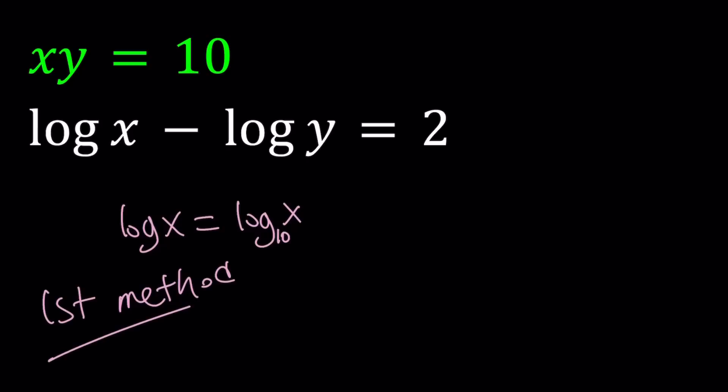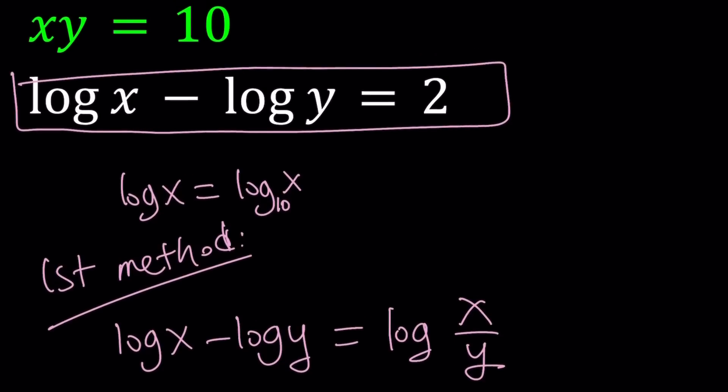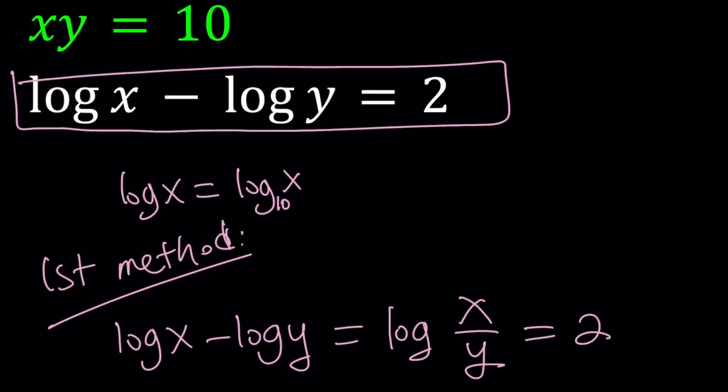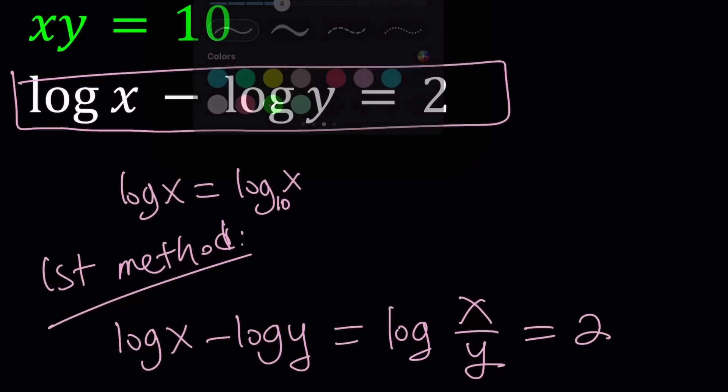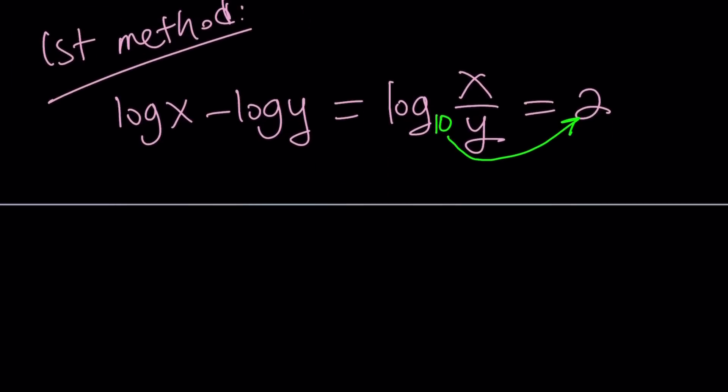For my first method, I believe we can do more than two methods, but anyways. First method can be to condense this expression into a single one. So how can I write log x minus log y? I can write it as log x over y. I have to be careful. x and y both have to be positive because of the domain. And that equals 2. And then I can use the definition. Remember what I told you? Base is 10. So you can go ahead and put a little invisible 10 there, right? That's invisible. And then use the definition of logarithms.